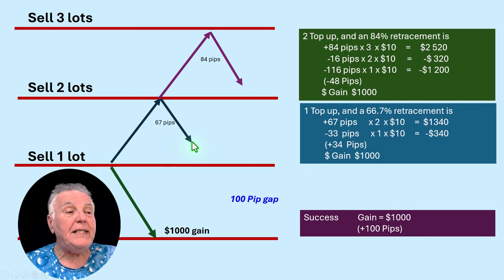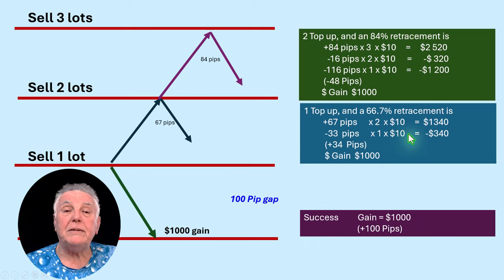Then you look at this other sell that was here, that is still actually negative. It's negative 33 pips, but that only had a one lot allocation of $10 per pip.